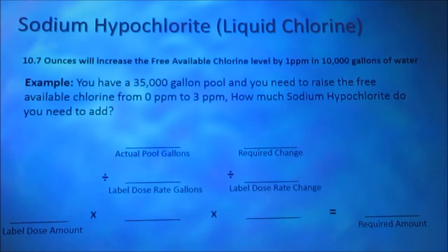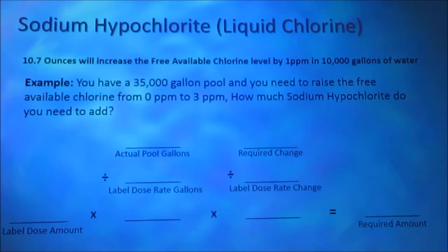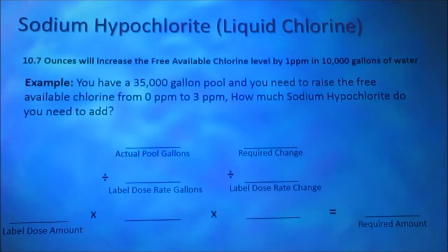You have a 35,000 gallon pool and you need to raise the free available chlorine level from 0 to 3 parts per million. How much sodium hypochlorite do you need to add? Our label instructions read: 10.7 ounces will increase the free available chlorine level by 1 part per million in 10,000 gallons of water.